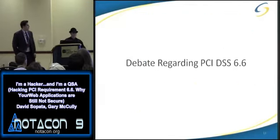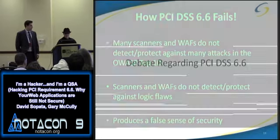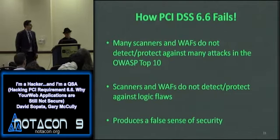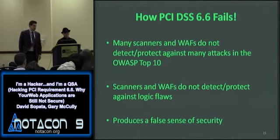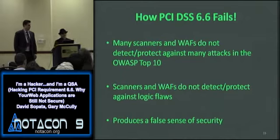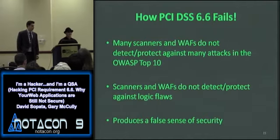Now let's talk about what's problematic with the standard — how PCI DSS 6.6 fails. Many scanners and web application firewalls with their default configurations don't even detect the sorts of vulnerabilities that are in the OWASP Top 10. I looked at a number of commercial products — scanners and web application firewalls — and found they're just not doing their job; they're not really doing what they're intended to do.